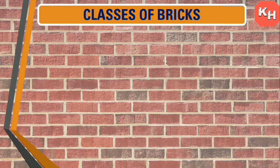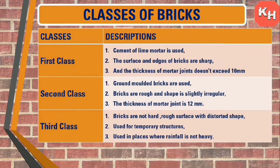There are mainly three classes of bricks: first class, second class, and third class. In first class bricks, cement or lime mortar is used; the surface and edges are very sharp, and the thickness of mortar joints doesn't exceed 10 mm. In second class bricks, ground-molded bricks are used; bricks are rough in shape, and the thickness of mortar joints is slightly irregular at 12 mm.